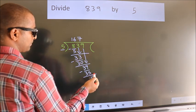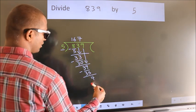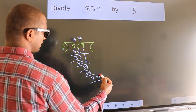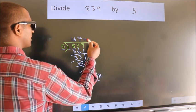No more numbers to bring down, so we stop here. This is our remainder. This is our quotient.